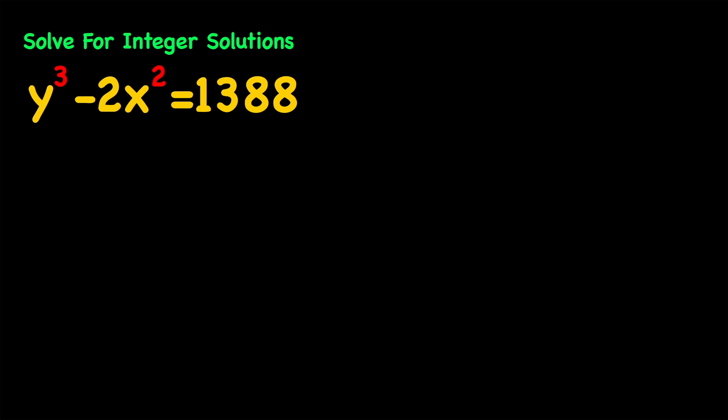So first of all let's start with factoring 1388 and if you do that we should have 2 times 2 times 347. From this I can say that 4 divides 1388 but 8 does not divide 1388.